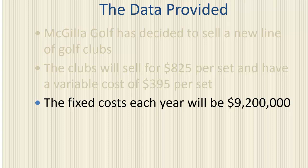The fixed cost each year will be $9,200,000. Fixed costs are costs incurred regardless of how many units a company builds. Examples include salaries of managers, insurance premiums, and property taxes paid on the manufacturing plant.